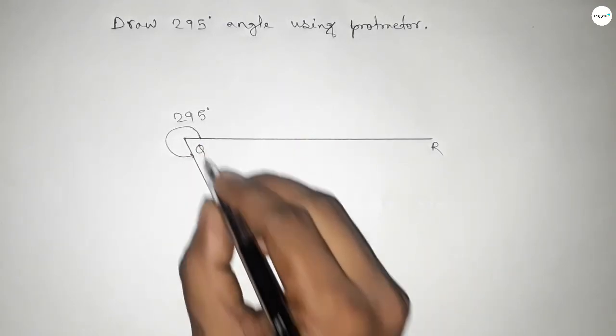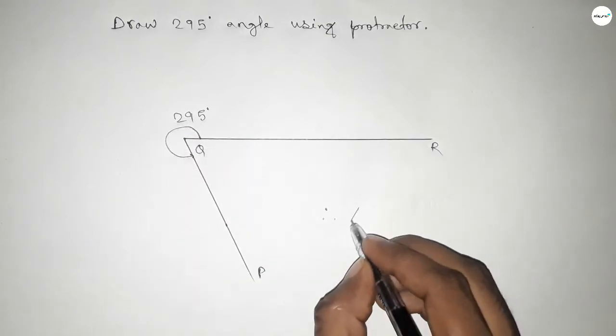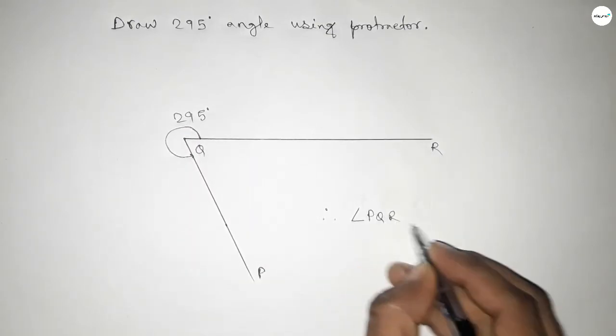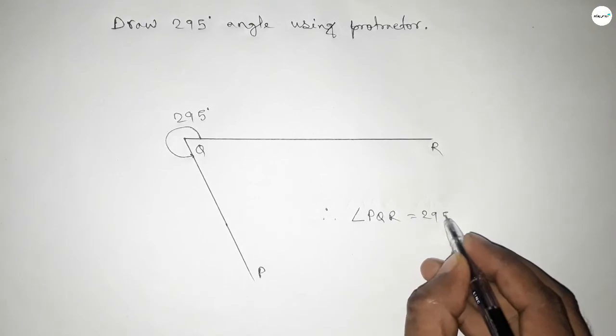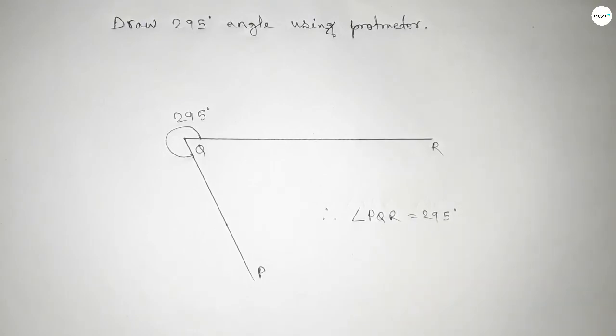So therefore angle PQR equal to, we can write 295 degree angle. That's all. Thanks for watching. If this video is helpful to you, then please share it with your friend. Thanks for watching.